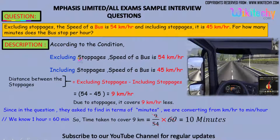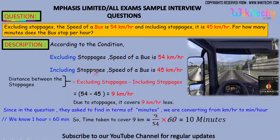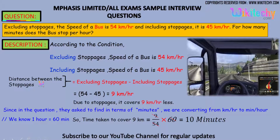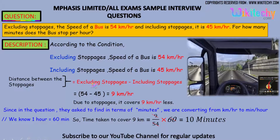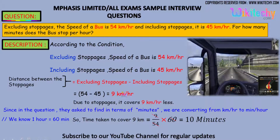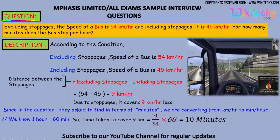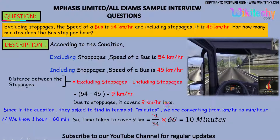The speed of the bus excluding the stoppages is 54, and including stoppages, the speed of the bus is 45. So the distance between the stoppages, or the speed difference, is 54 minus 45, which is 9 km per hour. Due to stoppages, it covers 9 km per hour less.